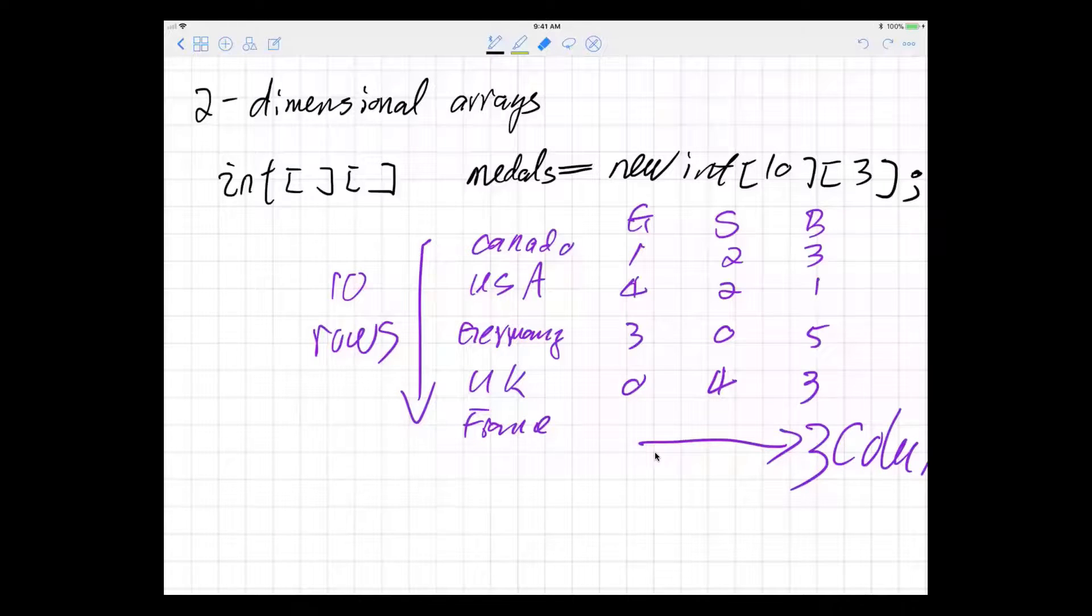Here is Java's way to declare two-dimensional arrays. In this example, we want to use the two-dimensional array to record the Olympic medals by country.